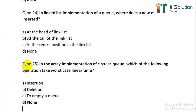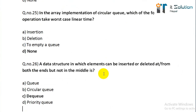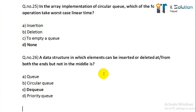Question number twenty-five: in the array implementation of a circular queue, which of the following operations takes worst-case linear time? Its correct answer is option D, none. Question number twenty-six: a data structure in which elements can be inserted or deleted from both ends but not in the middle is? Its correct answer is option, deque.